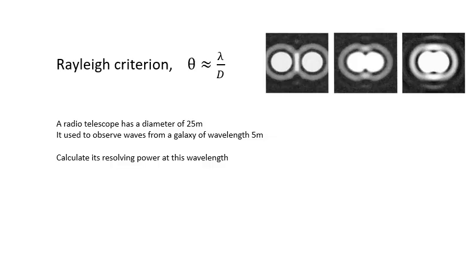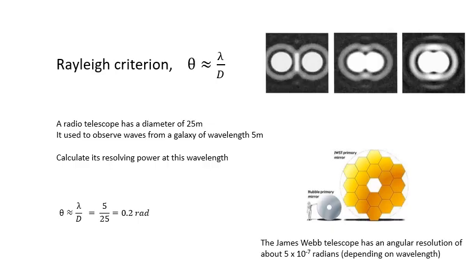For example, here's a question. I've seen loads of questions on past papers like this. A radio telescope has a diameter of 25 metres. It is used to observe waves from a galaxy of wavelength 5 metres. Calculate its resolving power at this wavelength. Have a go yourself. The answer is 3, 2, 1, and it's about 0.2 radians. Just a note that the James Webb telescope has an angular resolution of about 5 × 10⁻⁷ radians depending on its wavelength. It's got a fantastic resolution.